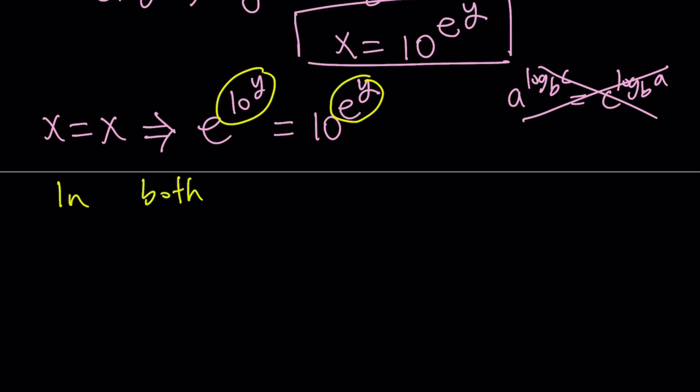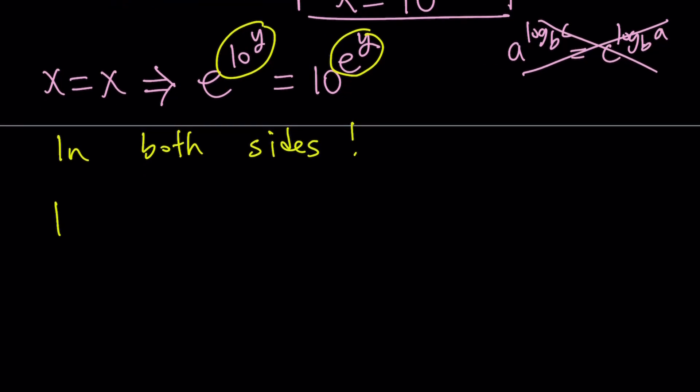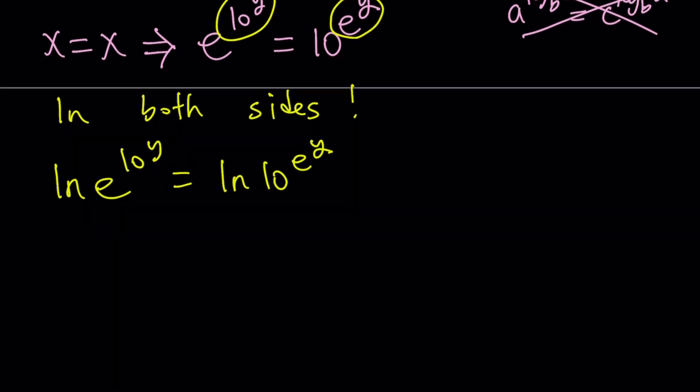To bring down the exponents, I have two exponents here, this one and that one, and I want to bring them down. So let's go ahead and ln both sides. That gives us ln e to the power 10 to the power y equals ln 10 to the power e to the power y. Of course, since these are exponents, we can go ahead and move them to the front. This gives us 10 to the power y times ln e equals e to the power y times ln 10. Notice that ln means log with base e. So this is equal to 1. In other words, ln e equals 1.